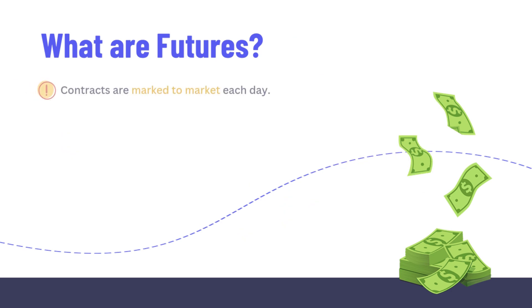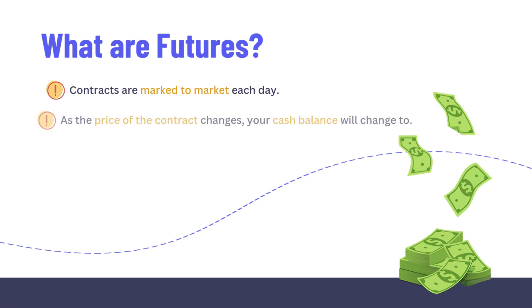A key feature of trading futures that you need to understand is that the contracts are marked to market each day. This means that as the price of the futures contract changes each day, your cash balance will fluctuate too.